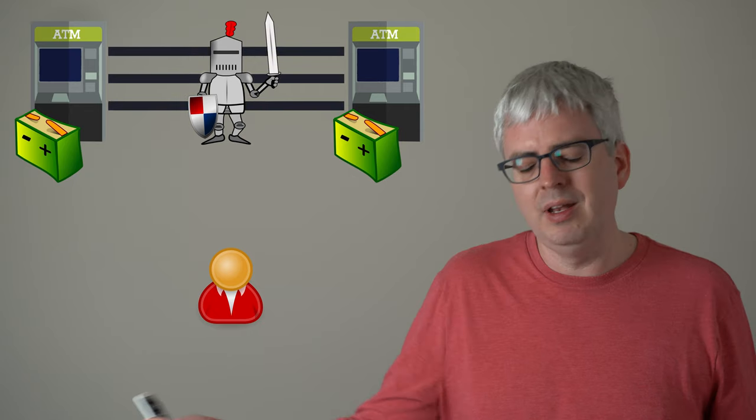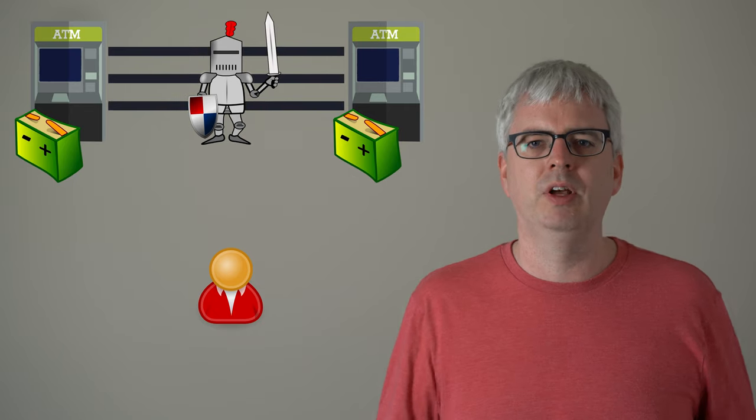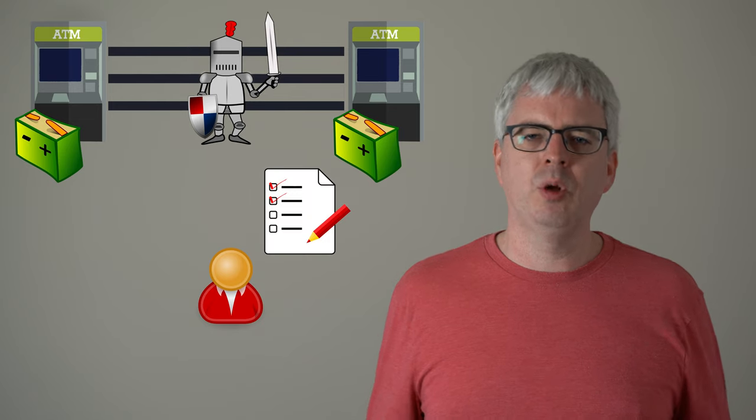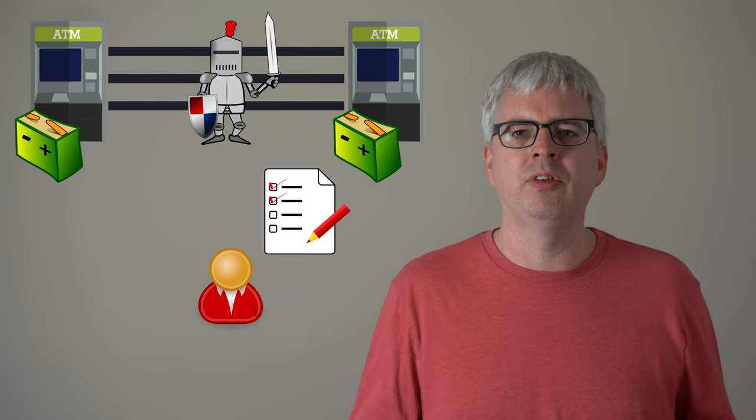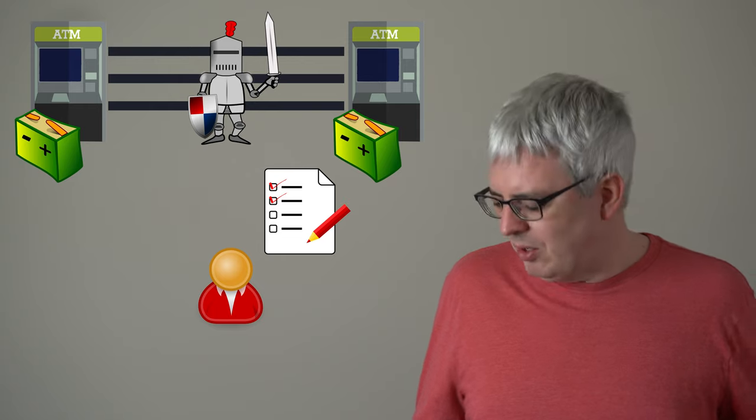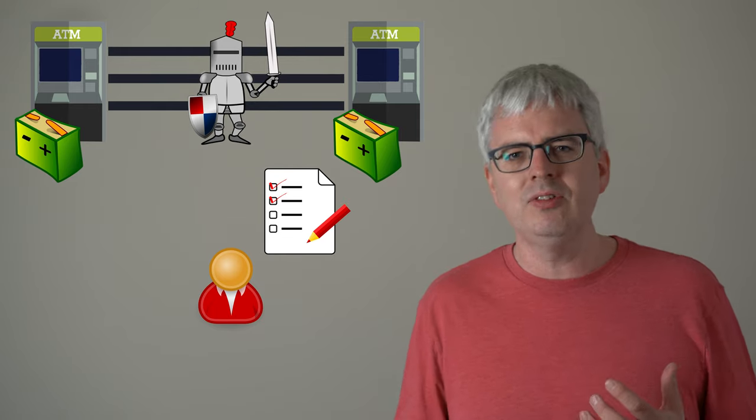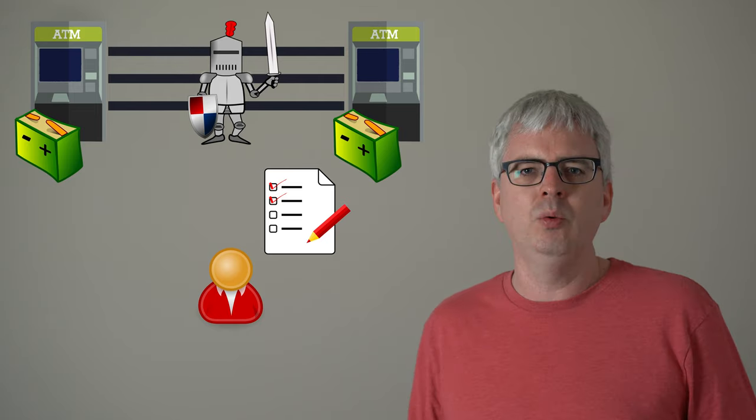We could buy redundant connections, so that when one network connection fails, we can just use another one. Or maybe we could just test our software better, so that we're not going to have failures due to bugs as often. You know, there's lots you can do to increase availability. This trade-off between consistency and availability is not necessarily the one you want to make.